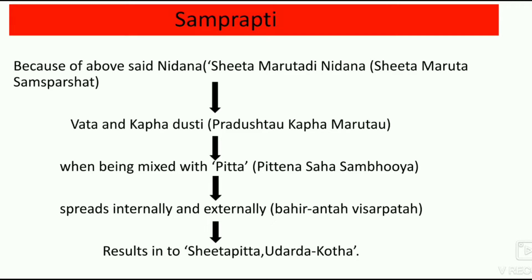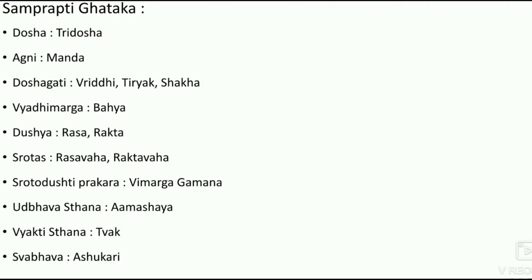Because of abusive Nidanas, Vata and Kapha Jushti occurs. When being mixed with Pitta, they spread internally and externally, which causes Sheta Pitta, Udarda and Kota. Samprapti Ghatakas of Sheta Pitta: Doshas are Tridosha; Agni is Mandagni; Doshagati is Priddi and Triyak; Vyadhi Marga is Bahiya; Durshya is Rasa and Rakta; Shrutasas are Rasa Vaha and Rakta Vaha; Shrutha Durshi Prakara is Vimarga Gamana; Udbhava Sthana is Amashaya; Vyadhi Sthana is Tvak; Swabhava is Ashurkari.